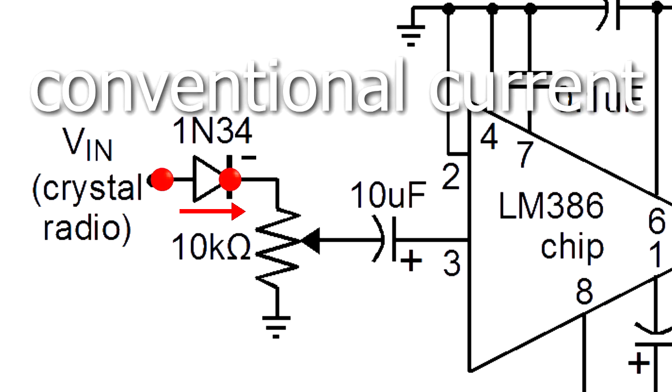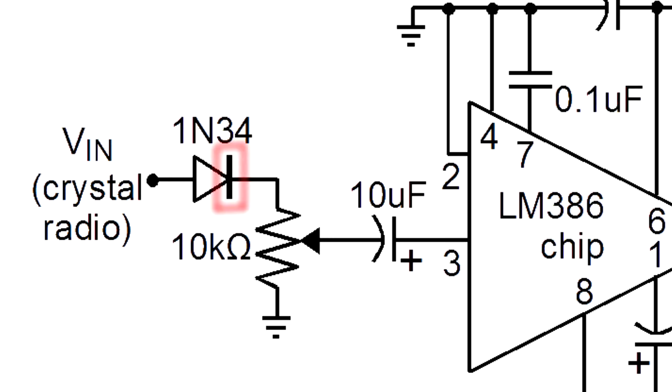Conventional current is in the opposite direction, since that's the flow of positive charge. So conventional current flows in the direction of the arrow. Notice that the line next to the arrow corresponds to the line drawn near one end of the actual diode.